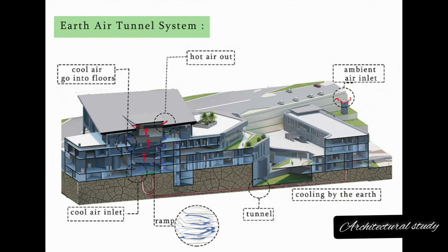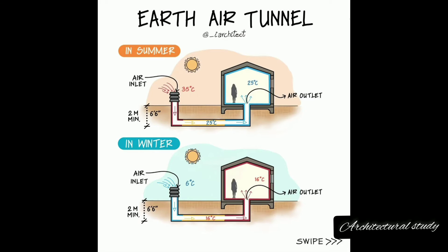Airflow: Required airflow depends on building size and desired cooling/heating capacity. Material of the Pipe: HDPE, PVC, and concrete are common choices, with varying cost, durability, and thermal conductivity considerations. Duct Layout: Open-loop systems offer high heat exchange but require air filtration, while closed-loop systems provide cleaner air but may need longer pipes. Spiral and vertical configurations are also employed.